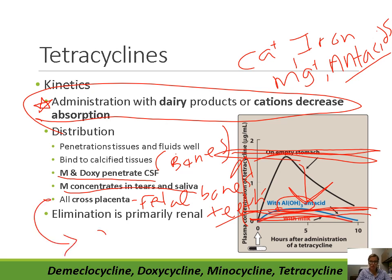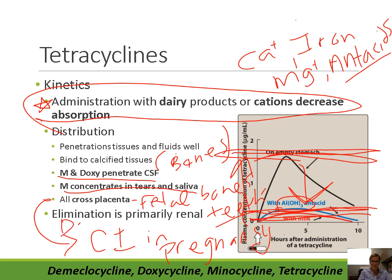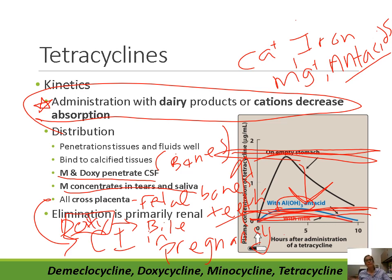For most tetracyclines, elimination is primarily renal. Doxycycline is the exception — it is eliminated in the bile, which means doxycycline is preferred in patients with renal dysfunction. For all other tetracyclines in renal dysfunction, dosing must be adjusted and accumulation monitored carefully.